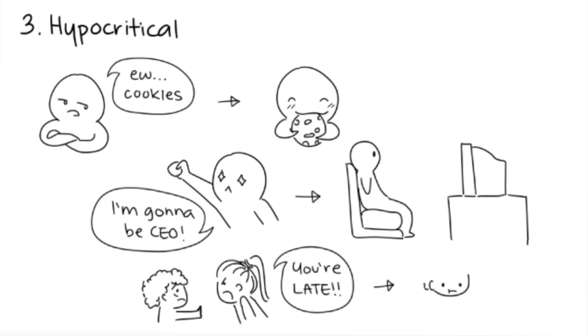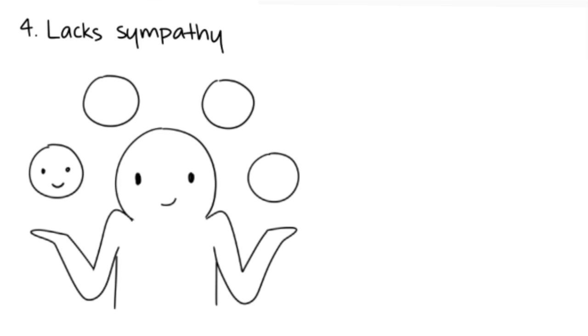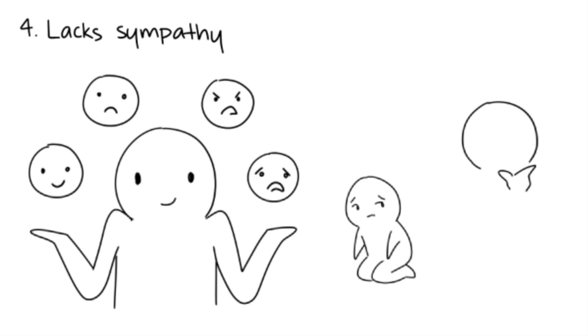Yet they themselves will often be late or even reschedule plans with you with no valid explanation or apology. Four: they lack sympathy. Empathy is the ability to understand someone's emotions. Sociopaths certainly understand your emotions, they just have no sympathy for you.